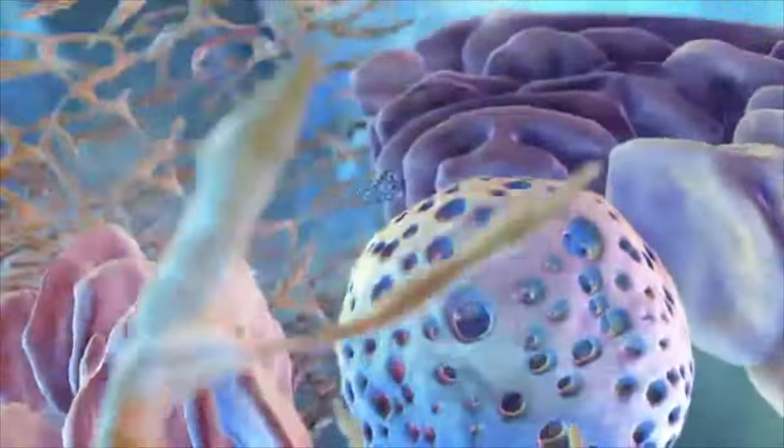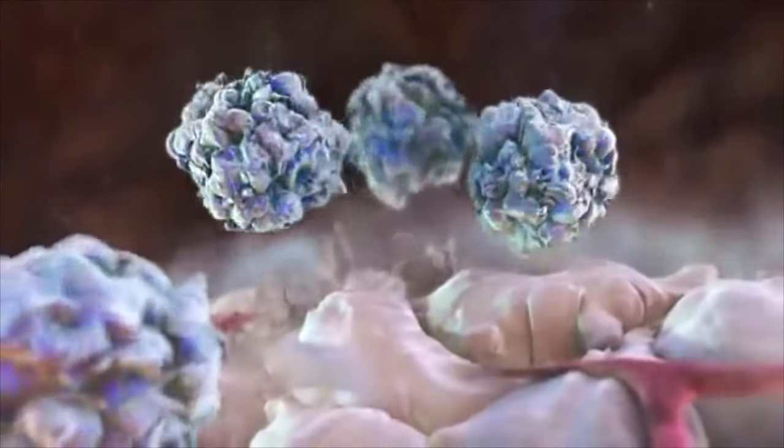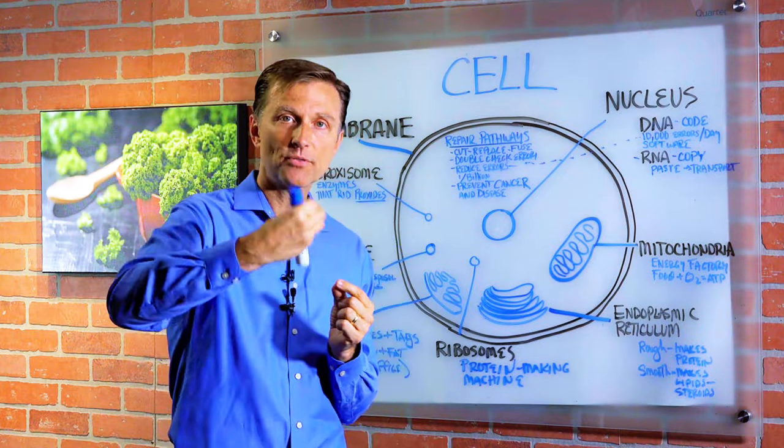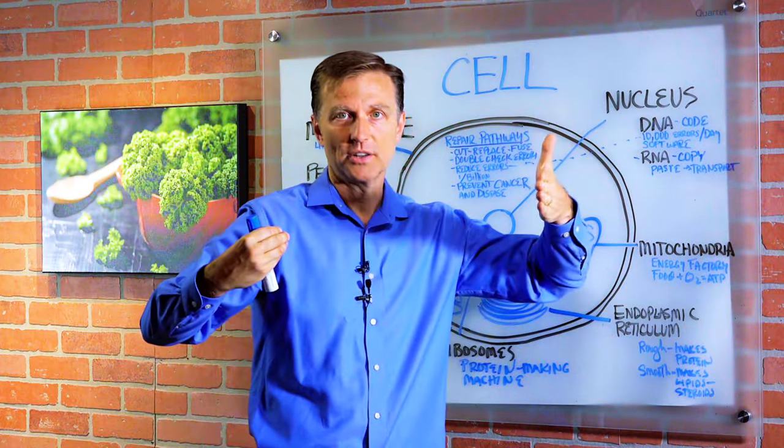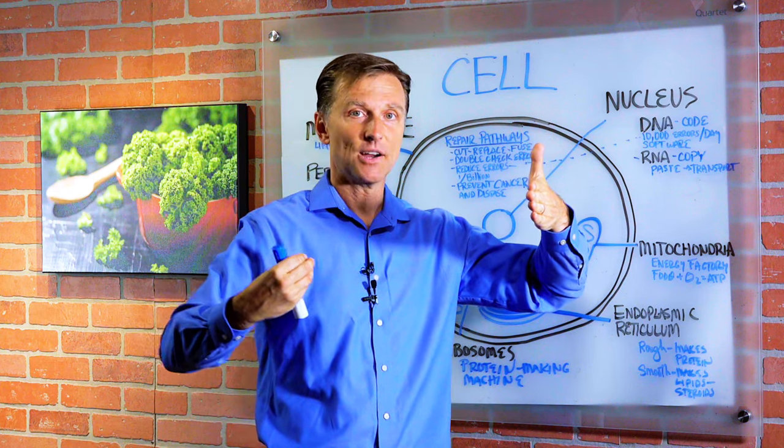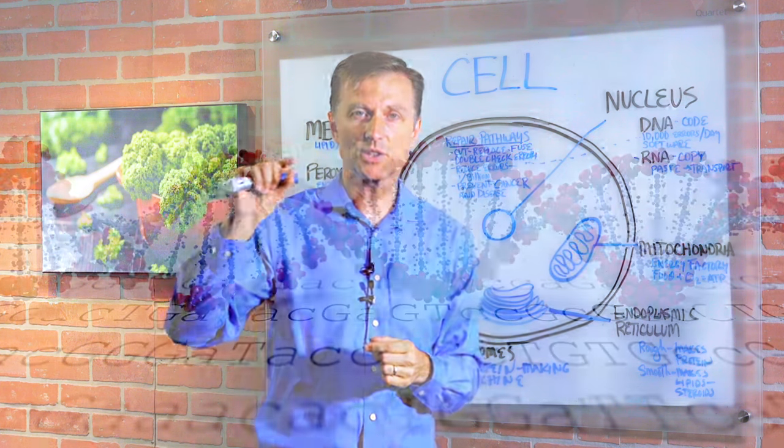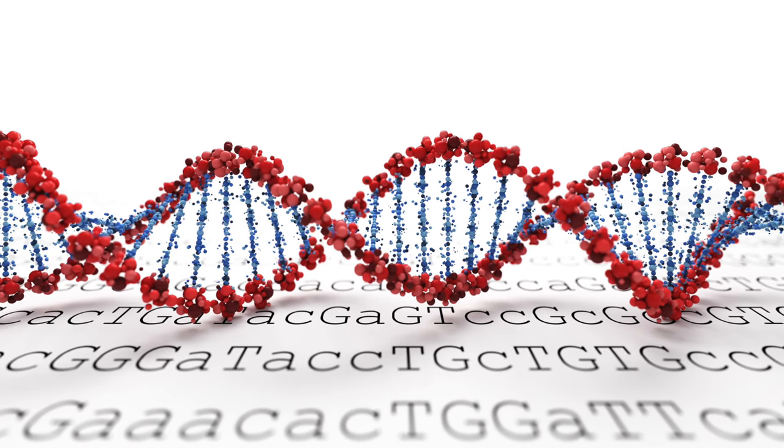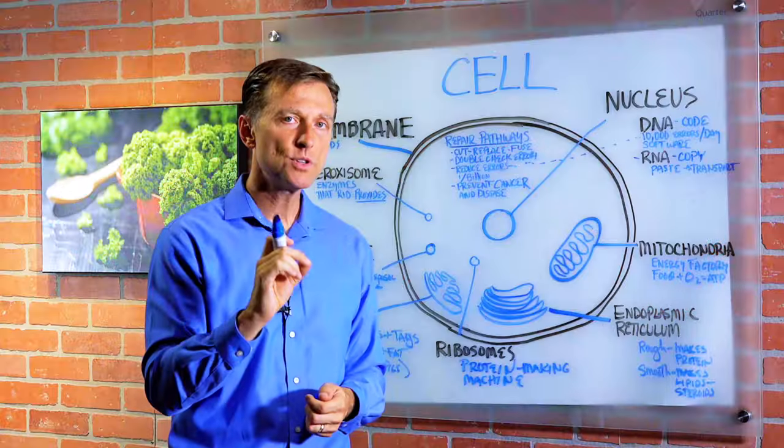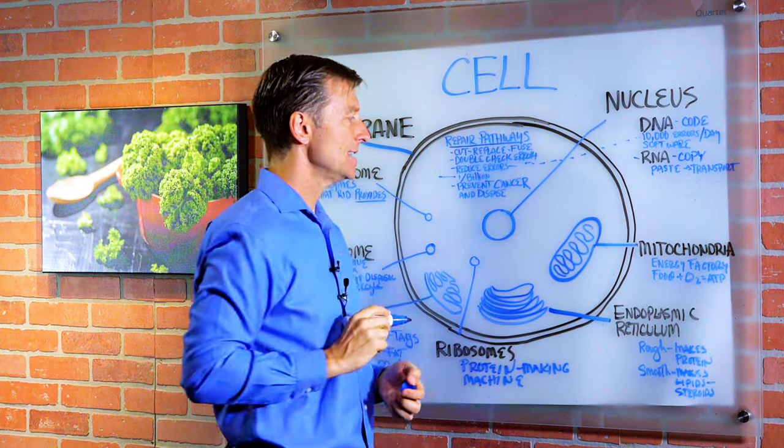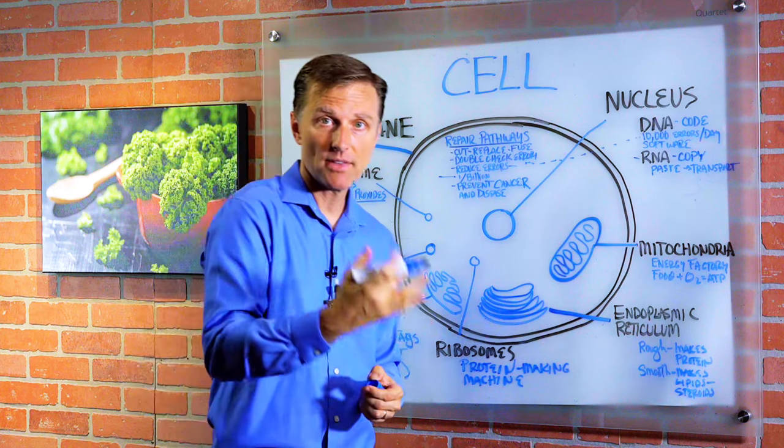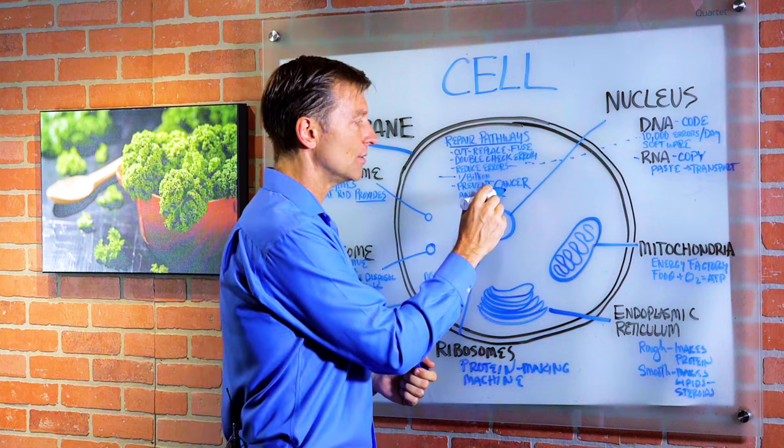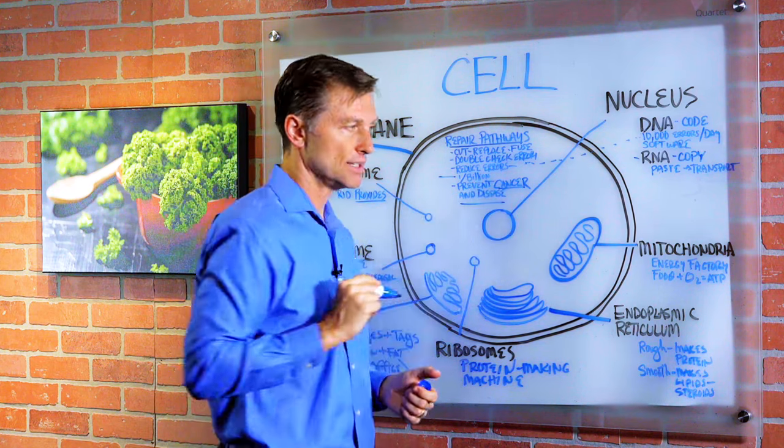Then what it'll do, it'll cut out the section of errors, replace it with new one or fuse it together. And then there's another proofreader unit that comes behind the initial proofreader to make sure they didn't make any errors to look and read the code to make sure it's exact. And they also have the capacity to cut out the bad code, put in the new code and replace it to the point where you can reduce the errors to one in a billion. This is incredible because if these errors are there, you have these mutations, which are alterations in the code, and that can lead to cancer and a lot of other diseases.